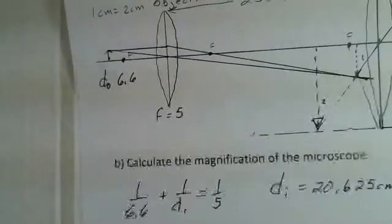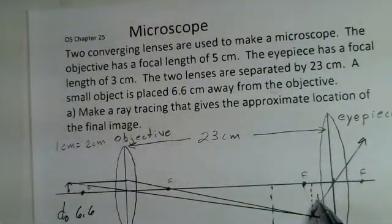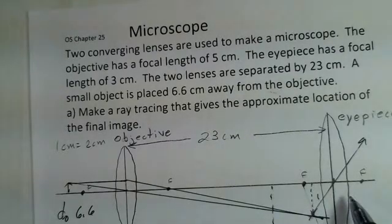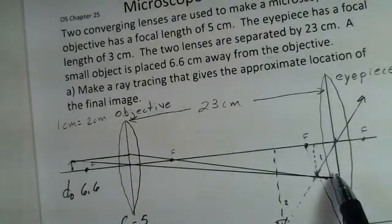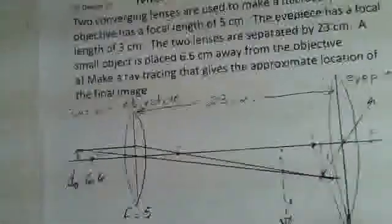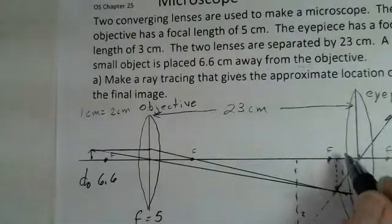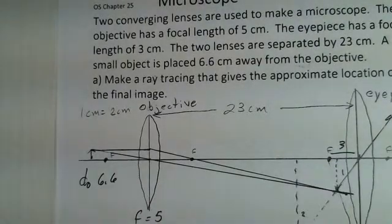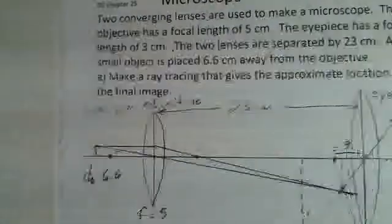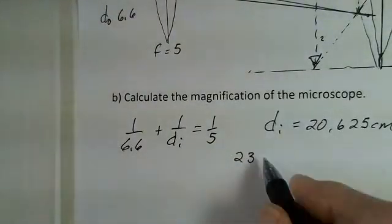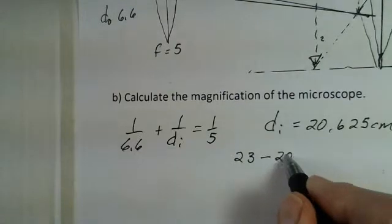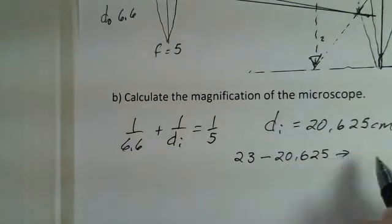Now this first image becomes the object for the second lens. Our first question would be, how far away is this object from this lens? Now 23 centimeters separates the two lenses. We're 20.625 centimeters away from the first lens. Now if I do a subtraction here, 23 is the separation of the two lenses, 20.625 centimeters is the distance from the first lens to the first image. I find that I'm 2.375 centimeters away from this eyepiece.